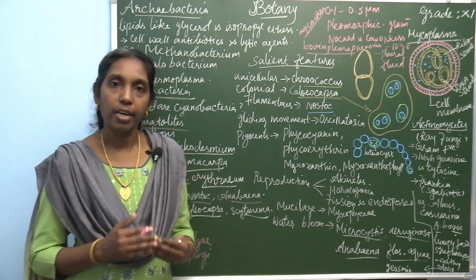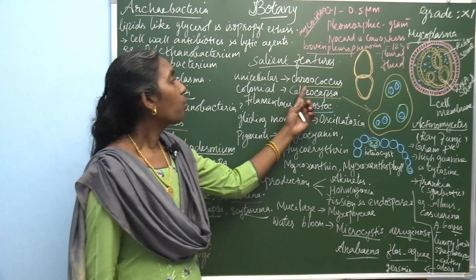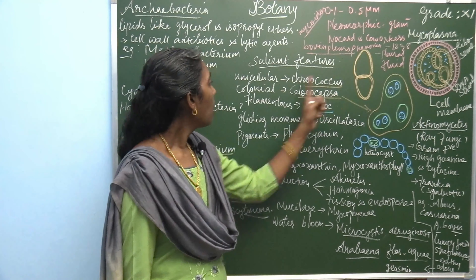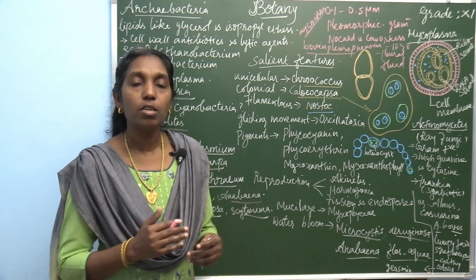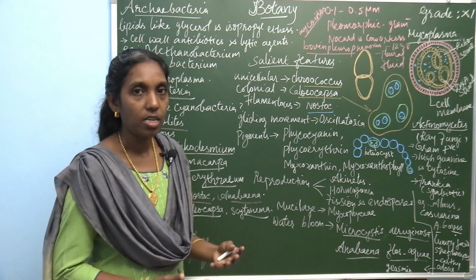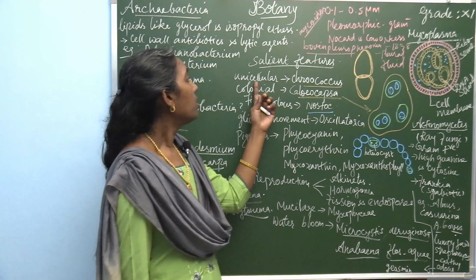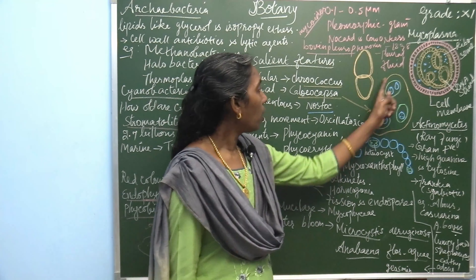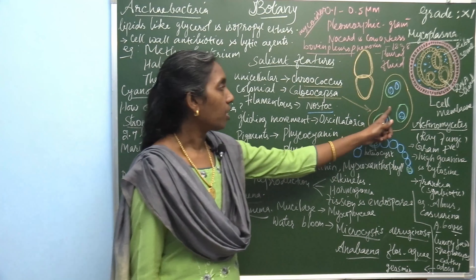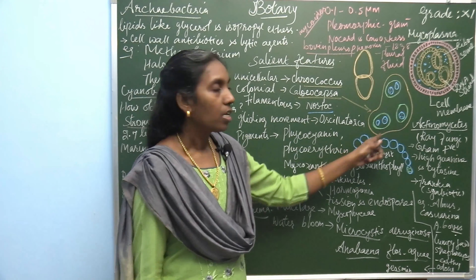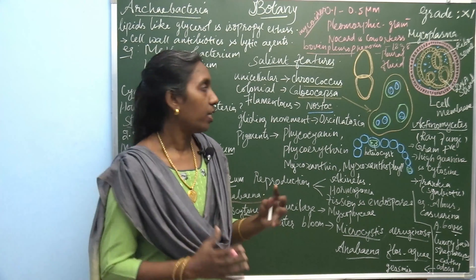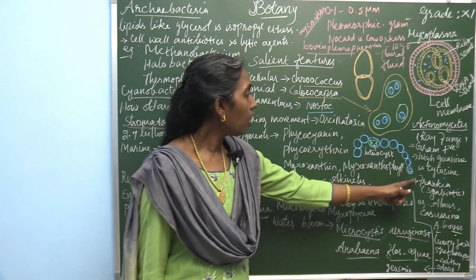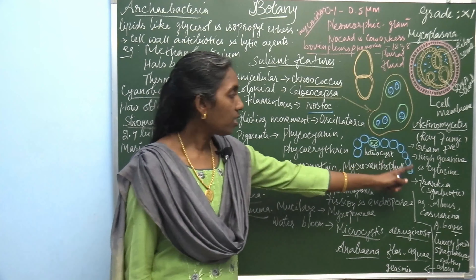The unicellular cyanobacterium is Chroococcus. This is the picture of Chroococcus. The colonial form is Gloeocapsa — this is Gloeocapsa colonies present as a colony. The filamentous form is Nostoc, which is a filamentous blue-green alga.